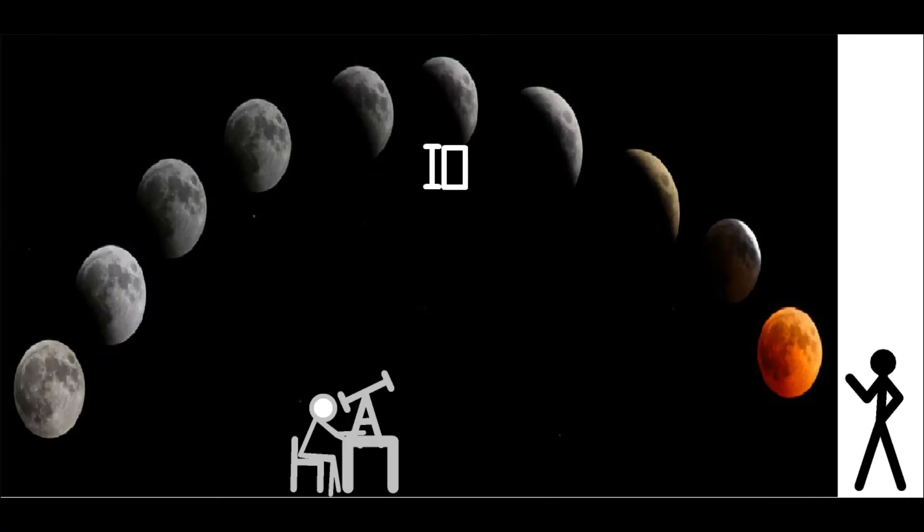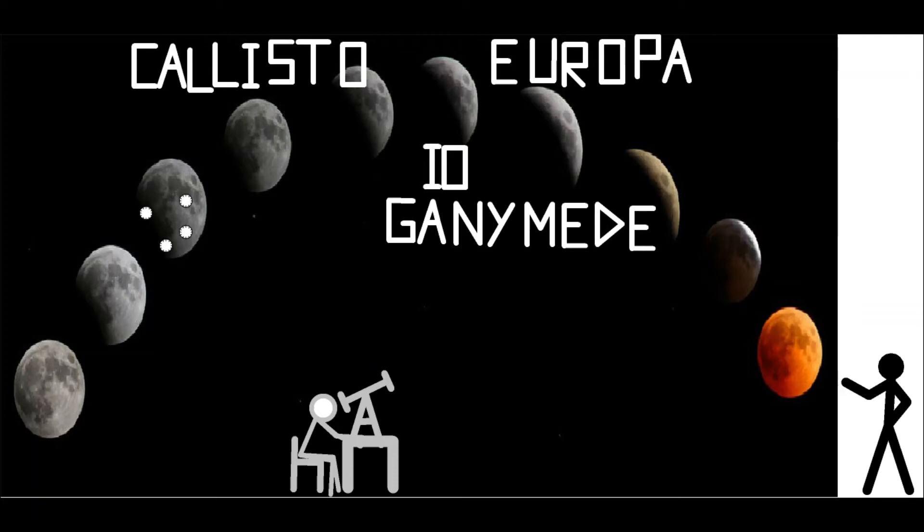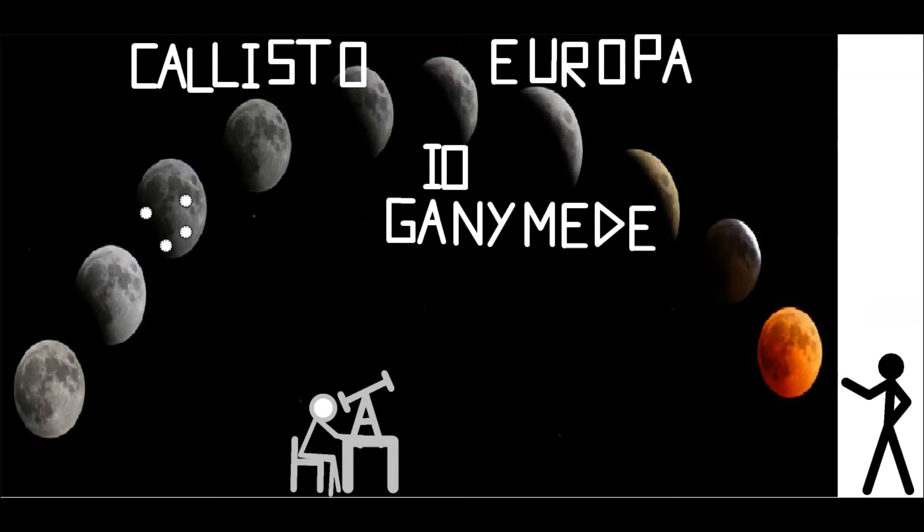From 1609 onwards, Galileo proceeded to discover some of Jupiter's moons: Callisto, Io, Europa, and Ganymede. He also proved that the moon's surface was not perfectly smooth, and discovered the planet Venus.